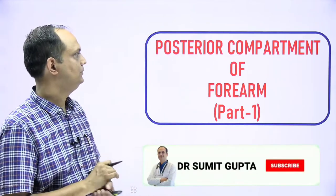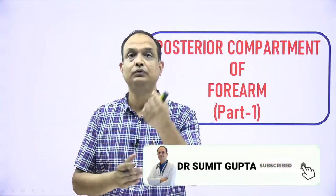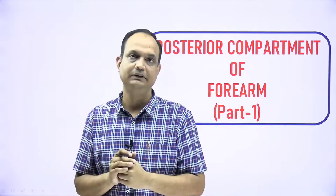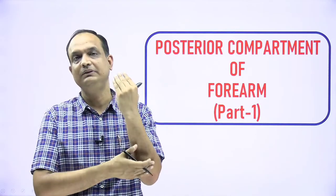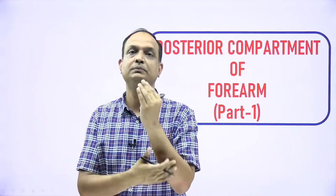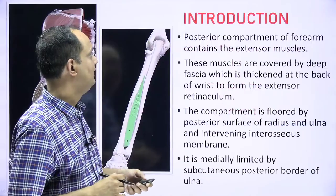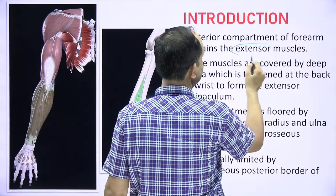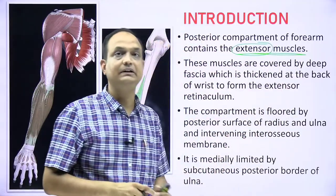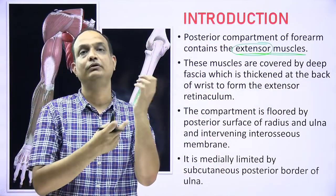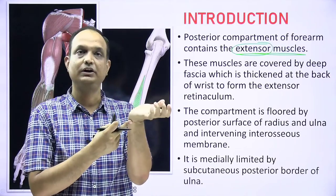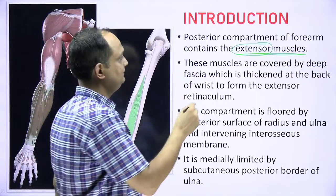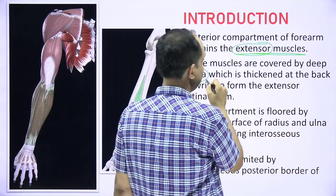Today we will discuss the posterior compartment of the forearm. There are 12 muscles present in this compartment. We will discuss the arrangement of these 12 muscles and see their orientation. This compartment is also known as the extensor compartment because these muscles are responsible for extension of the wrist joint.